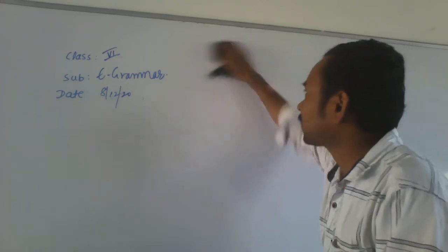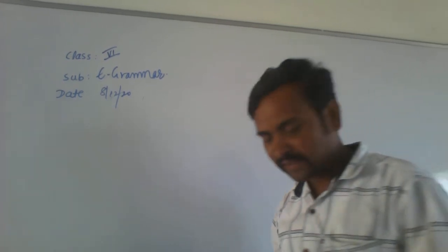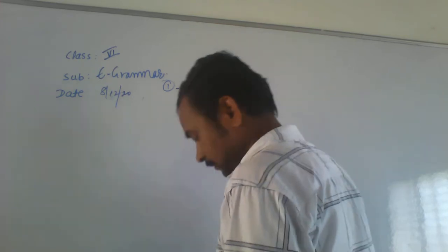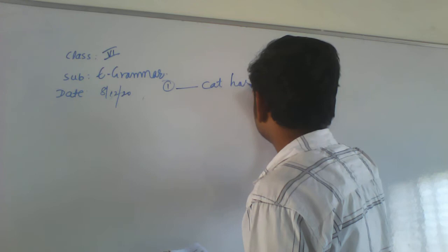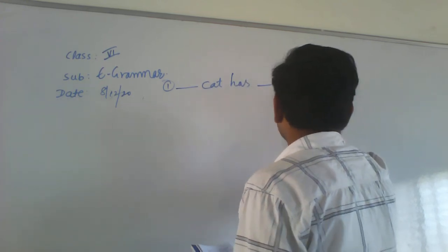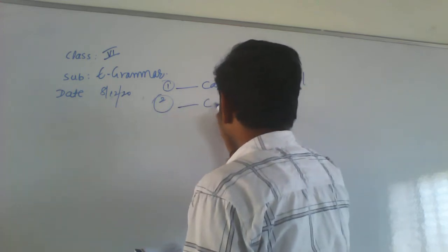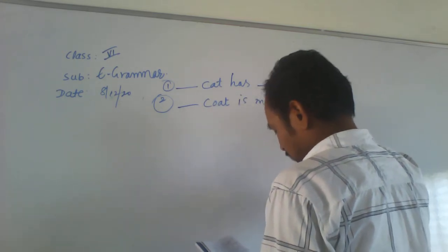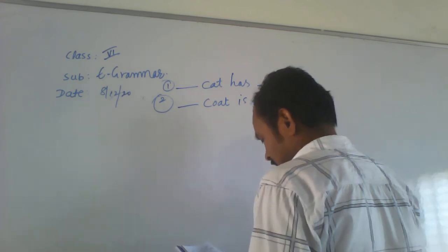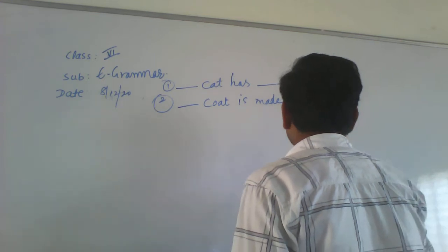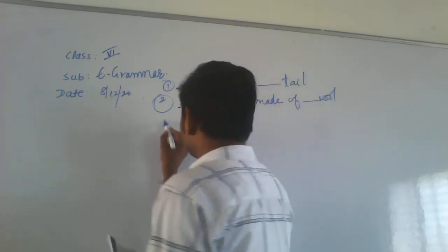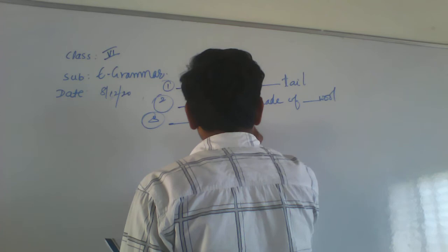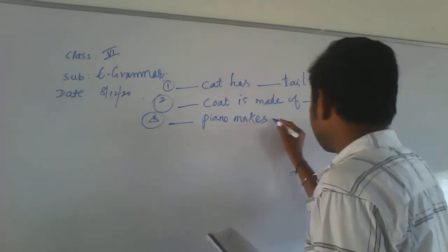Look at the second set of examples. First example: blank cats — blank tail. Second example: blank coat — blank wool. Third example: blank piano — blank music. Fourth example: blank iron — blank metal. Let's look at each one.